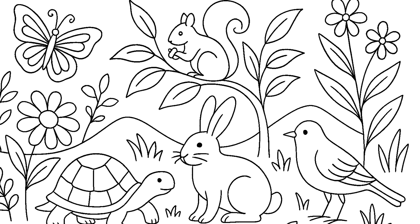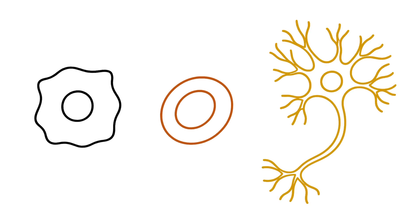The human body is made up of many types of cells. The skin contains skin cells, the blood contains blood cells, the brain contains nerve cells, and so on. The human body contains hundreds of different cell types, and it's estimated that an average adult has over 40 trillion cells.